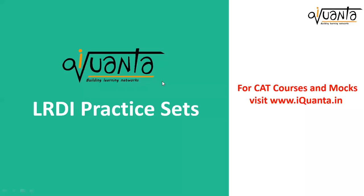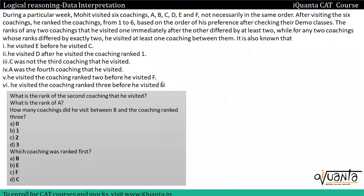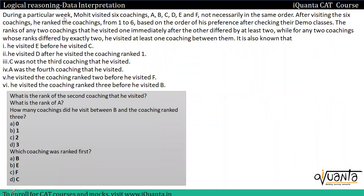Hi everyone! In this video we will understand how to solve this type of set. In this set we are given that during a particular week, Mohit visited six coachings A, B, C, D, E, and F — not necessarily in the same order. After visiting the six coachings, he ranked them from one to six based on his preference after checking their demo classes.